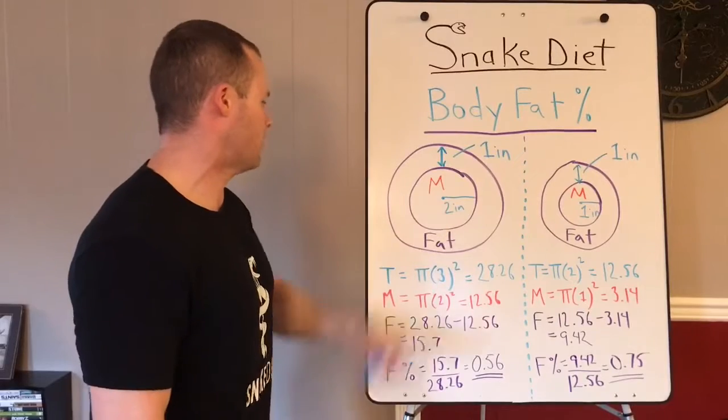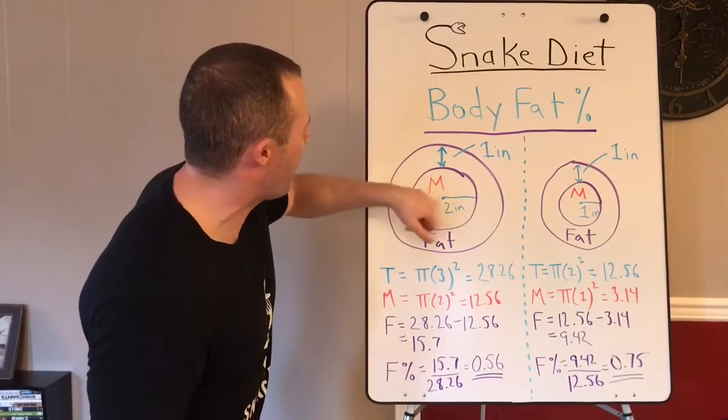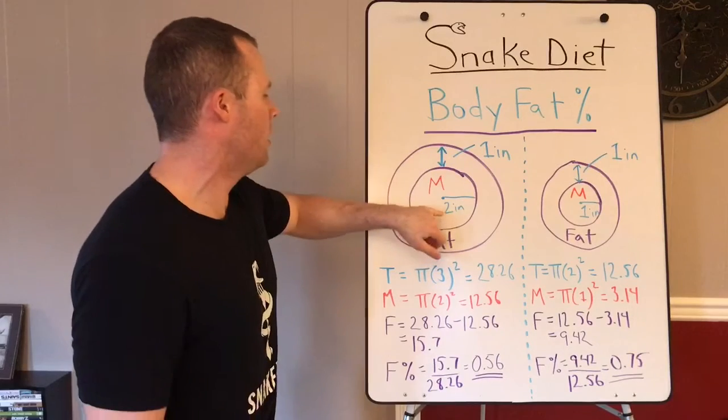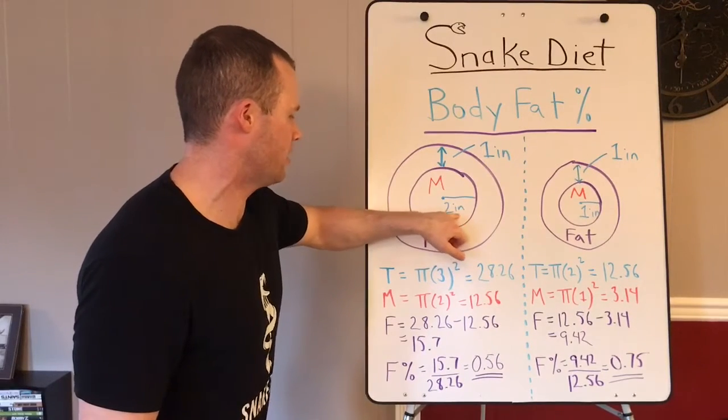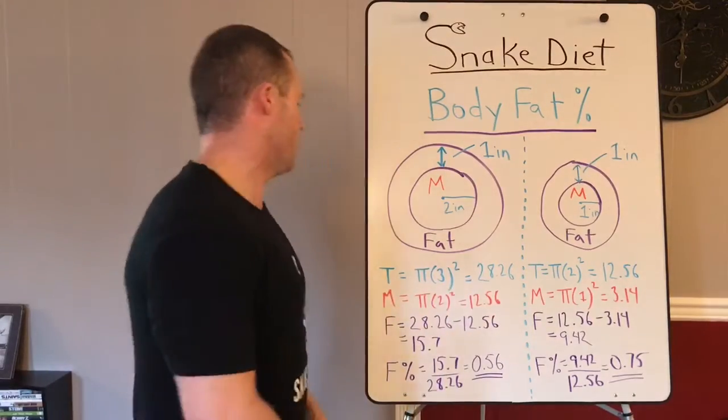Now you got the muscle. Muscle equals pi r squared again, so the muscle's the inner circle times the radius which is two inches. So pi times two squared equals 12.56.